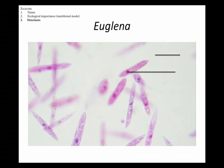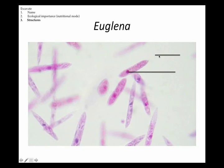Euglena is special ecologically because it can both perform photosynthesis and ingest food — making it a mixotroph, both autotrophic and heterotrophic. It has a flagellum for movement, swimming around to hunt at night. It also has chloroplasts for photosynthesis and a nucleus. They are small, oblong-looking organisms.